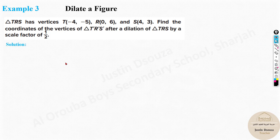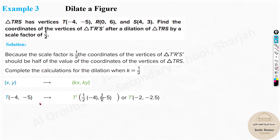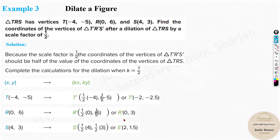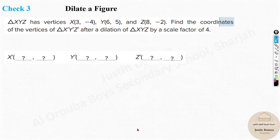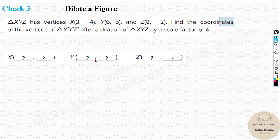Multiply all coordinates by the scale factor k = 1/2. The original T(−4, −5) becomes T'(−2, −2.5). R(0, 6) becomes R'(0, 3), since half of 0 is 0 and half of 6 is 3. S(4, 3) becomes S'(2, 1.5). That's the answer — the new dilated image has these coordinates.